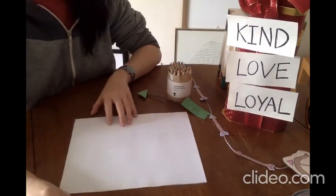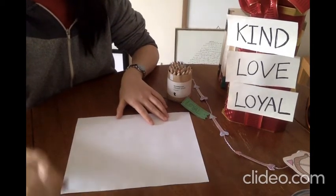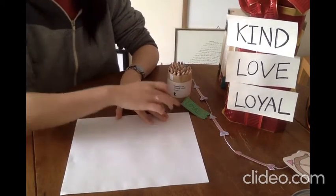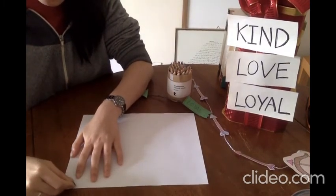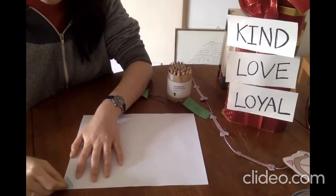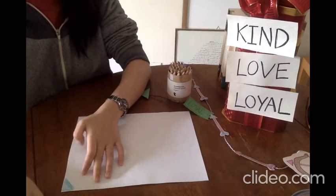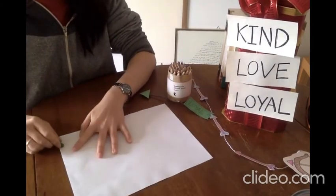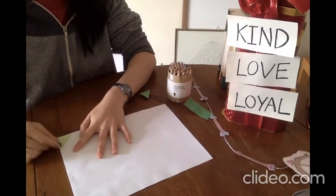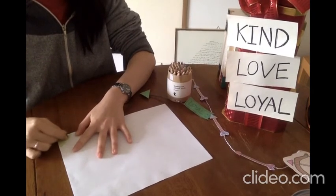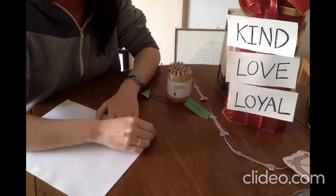So, first thing, I want you to take your paper and color the three corners of your paper. These will be the tips of our arrows. So, color them to triangles. And you can use whatever color you want. I'm choosing these three colors. Blue, green, and orange.